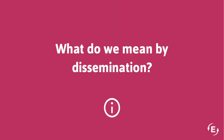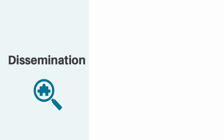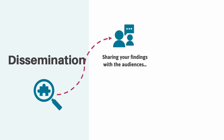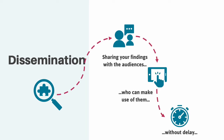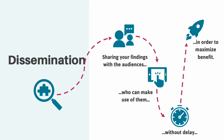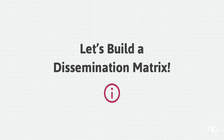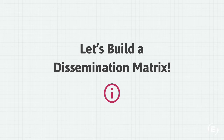So what do we mean by dissemination? Dissemination refers to the act of getting the products or outputs of your work to the audiences who can make use of them, and doing so in a timely fashion without delay, so that the potential benefits of your work are maximized. Now that we've gone over dissemination, let's build our own matrices using real examples. In building this matrix, we're going to consider intended audiences, intended uses of the products of our work, deliverables, timelines, and the resources we might need to enact this plan.